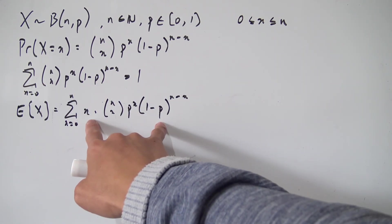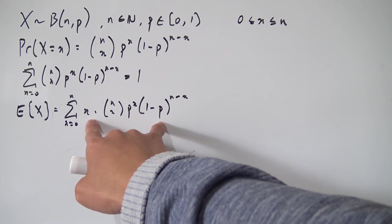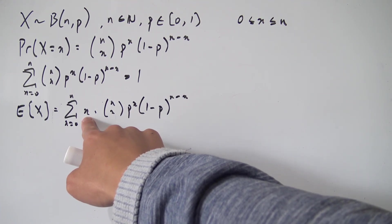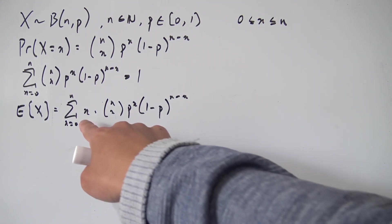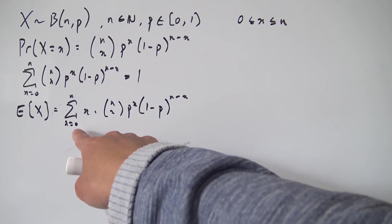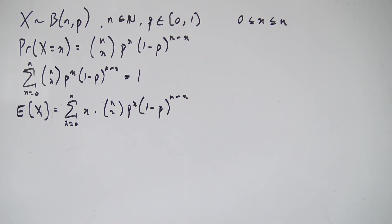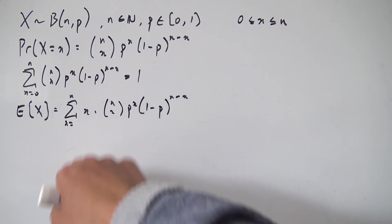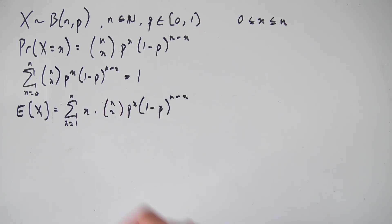Notice one subtle thing: when we plug 0 into this expression, this X becomes 0 and that kills off the whole term. So whenever X equals 0, it adds nothing to the entire sum. We can therefore start the sum from X equals 1 to N, because it's going to be the exact same thing.